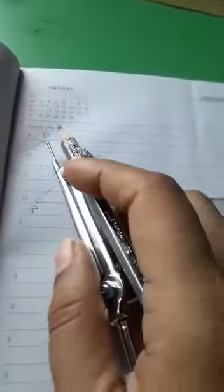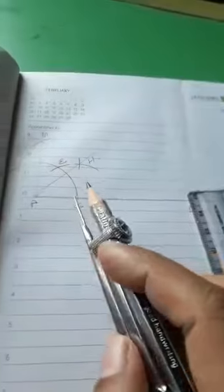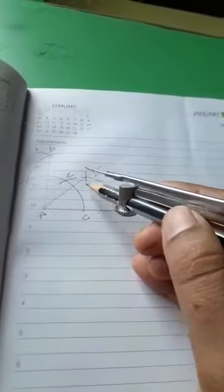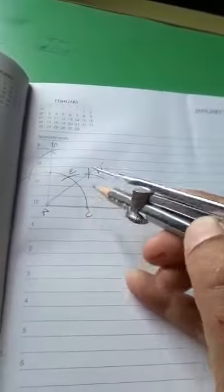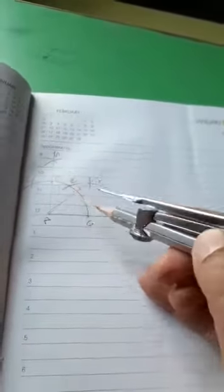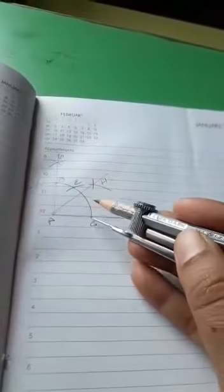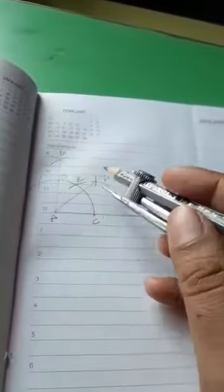From here, firstly we draw the angle of 90 degrees as in the previous first question. Now to draw an angle of 45 degrees, one arc with the same radius we will cut from point C and second from point O. With the same radius, firstly one arc from point C and one from O, both will intersect at point H. So this angle HAB will be equal to 45 degrees.